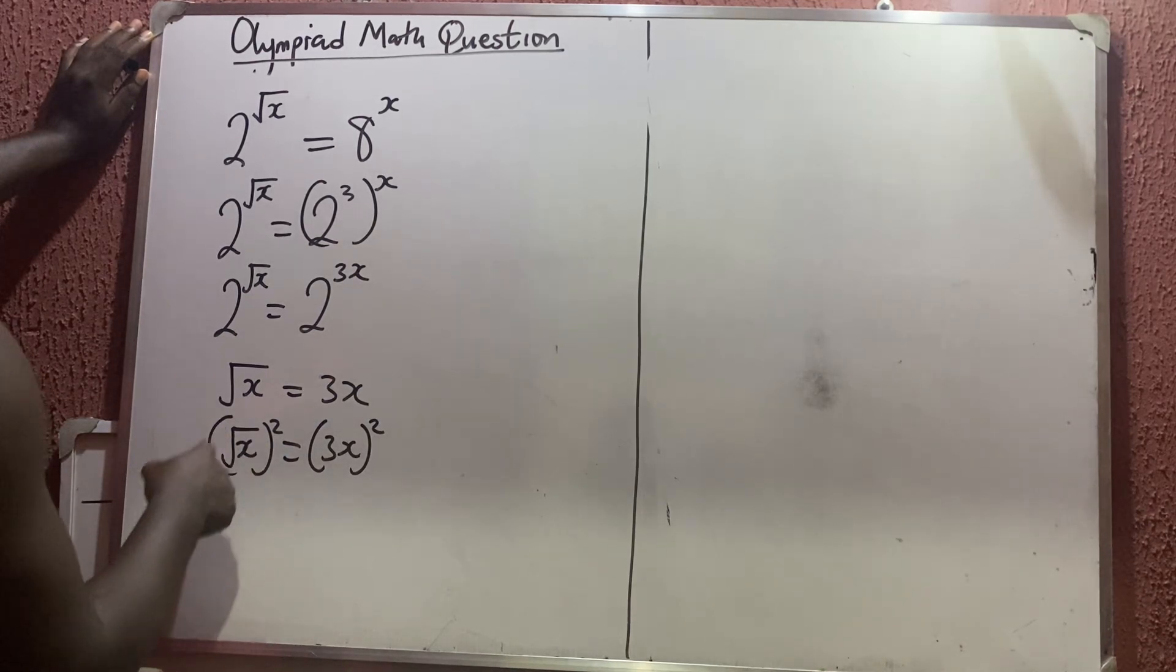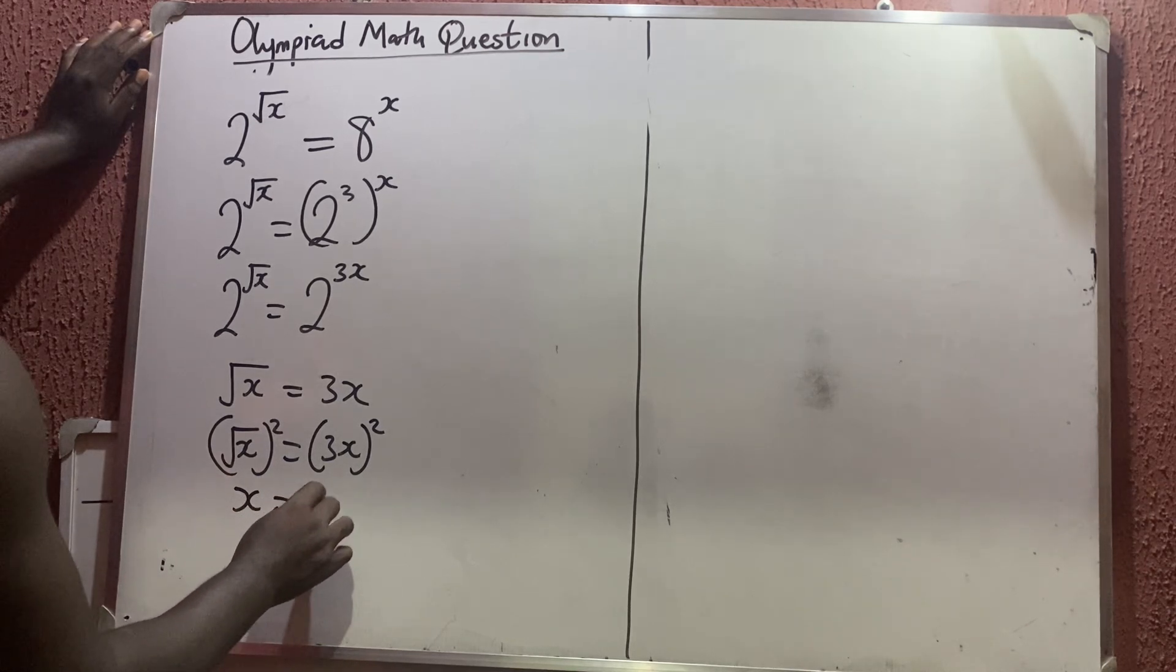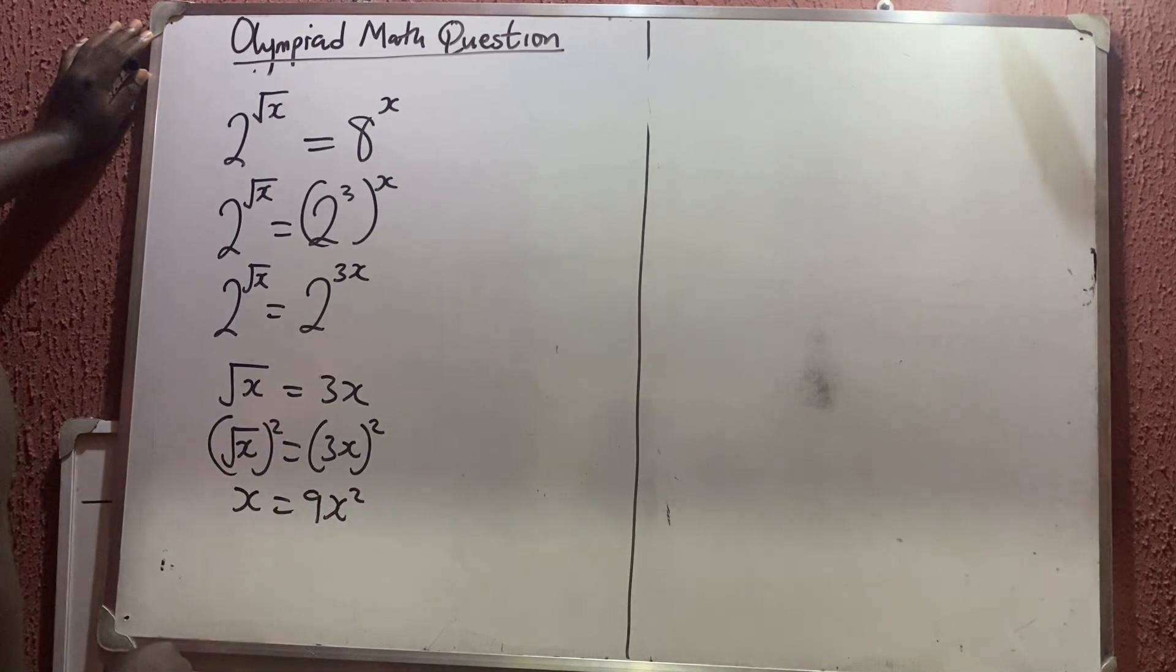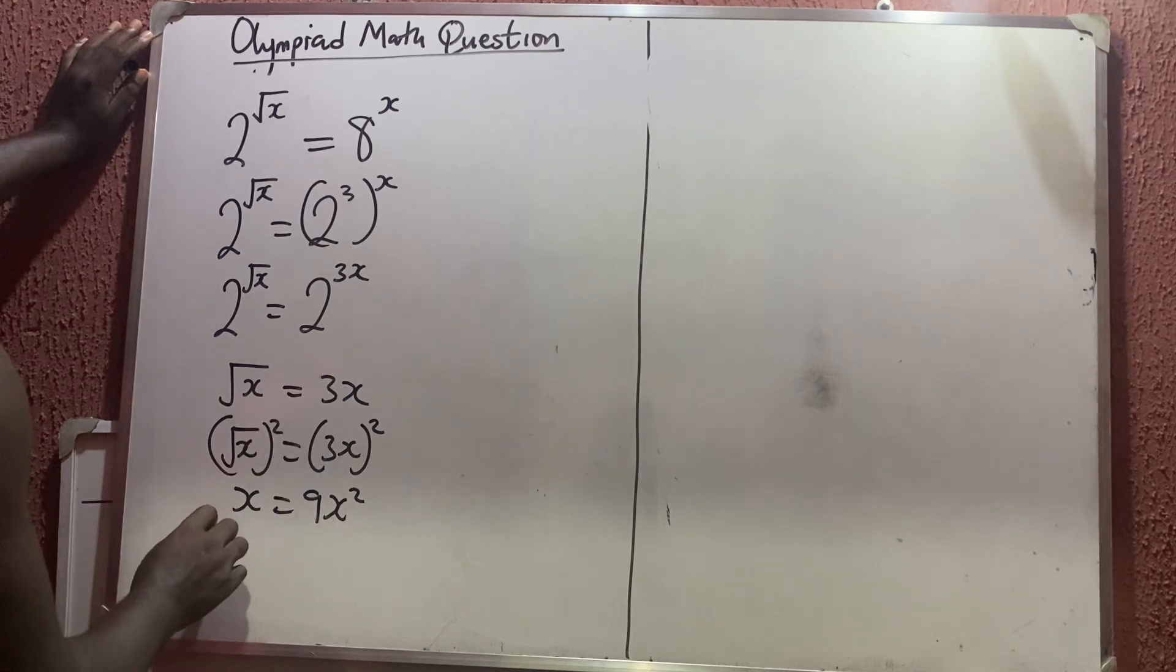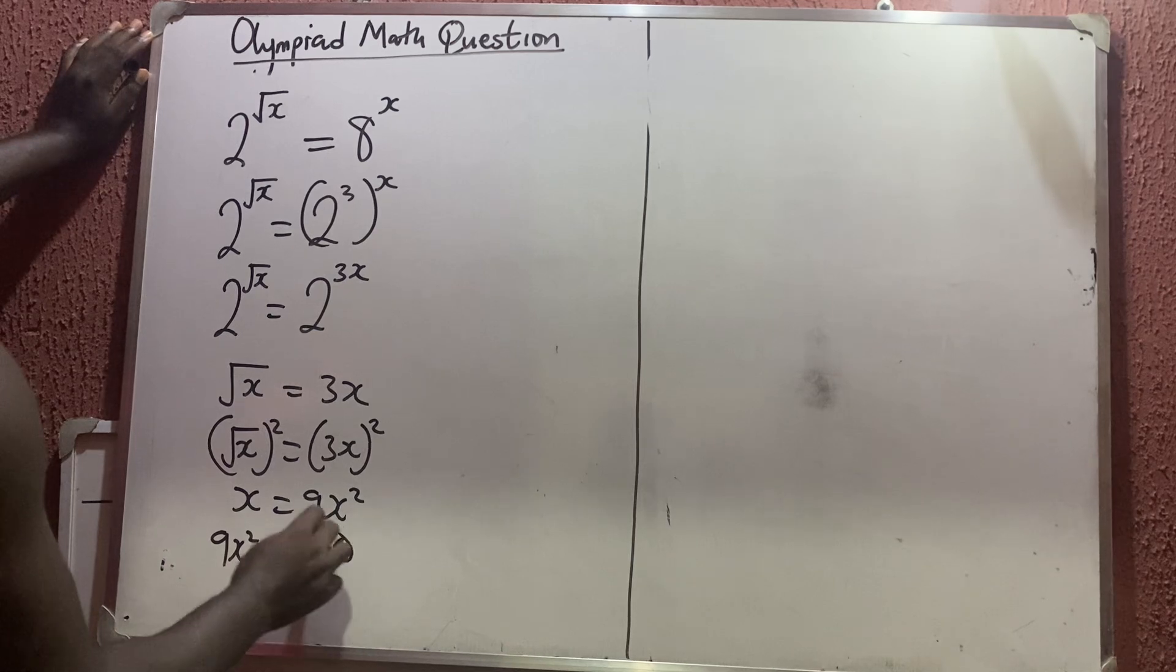So this taking care of this, I'm going to have that x is equal to 9x squared. So this one can come here to have that 9x squared minus x is equal to 0.